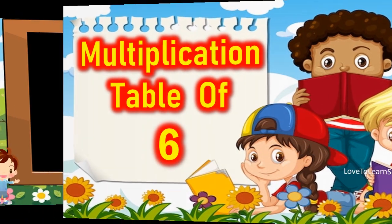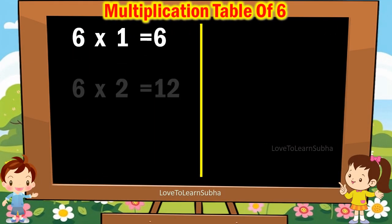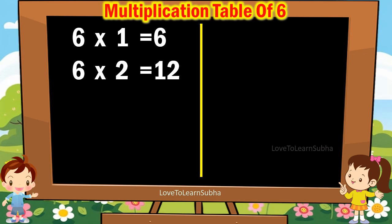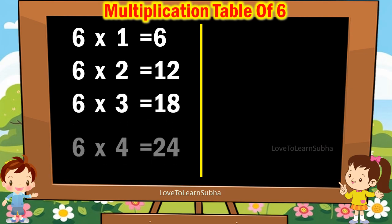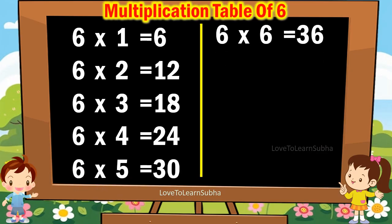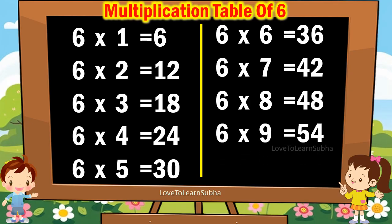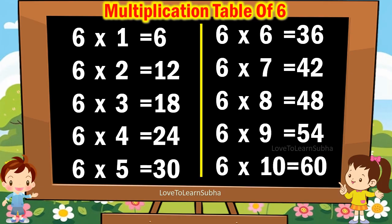6 1s are 6. 6 2s are 12. 6 3s are 18. 6 4s are 24. 6 5s are 30. 6 6s are 36. 6 7s are 42. 6 8s are 48. 6 9s are 54. 6 10s are 60.